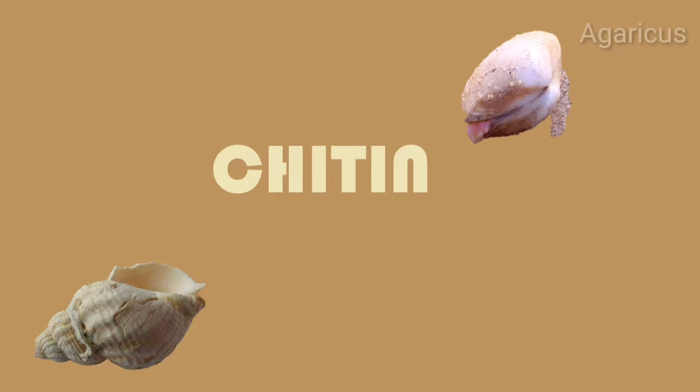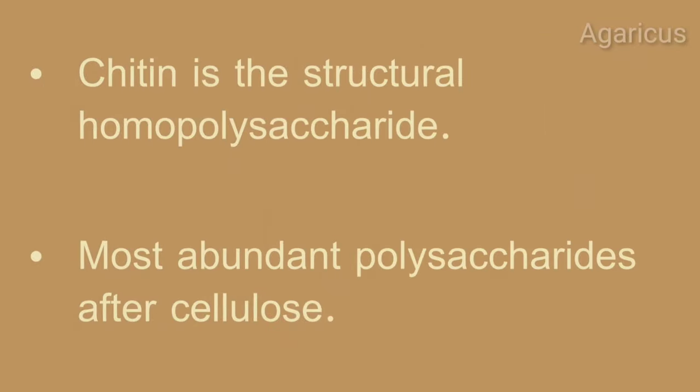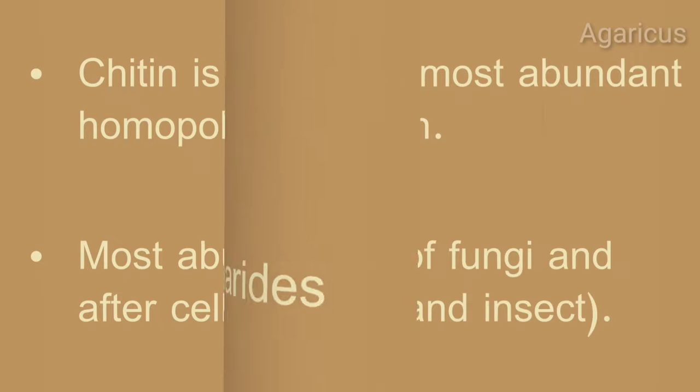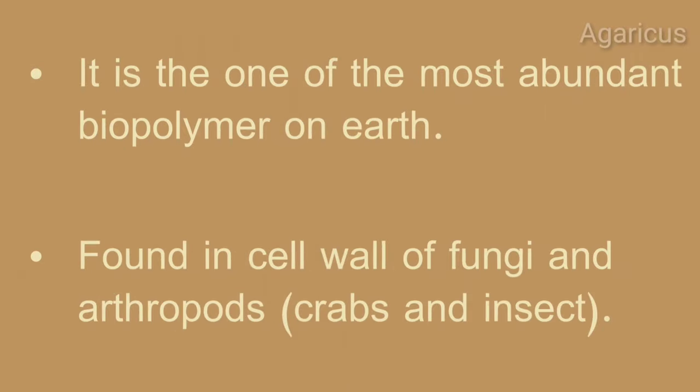Now we are discussing chitin. Chitin is the structural homopolysaccharide, the most abundant polysaccharide after cellulose. It is one of the most abundant biopolymers on earth, found in the cell wall of fungi and arthropods.